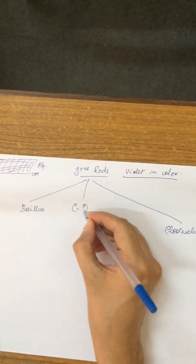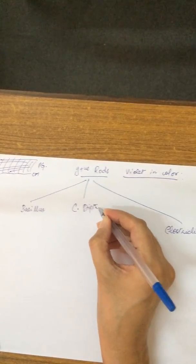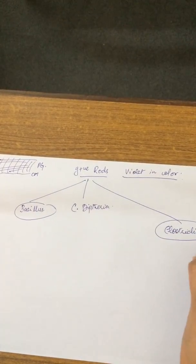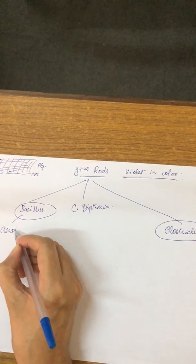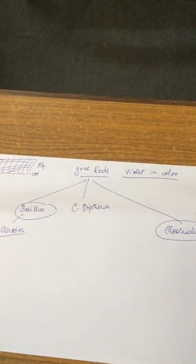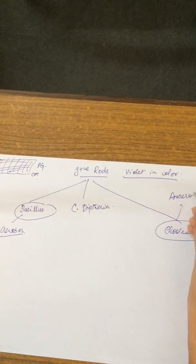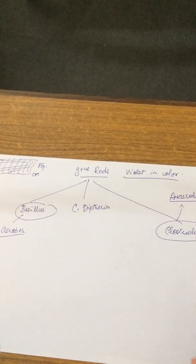And then we have Corynibacterium diphtheria. These two groups have one very basic characteristic: Bacillus are aerobes and Clostridium are anaerobes.